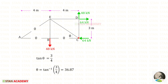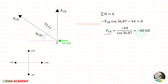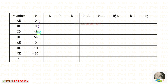Now let us take joint C. First we find angle theta: tan(theta) = opposite/adjacent = 3/4, so theta = tan⁻¹(3/4) = 36.87°. Applying sigma H = 0 at joint C: Hc is acting left (negative). We resolve FCE in the horizontal direction using cos(36.87°), which is also acting left (negative). For FCE we get −80 kN. FCD was already calculated. Let us now enter all the P values.